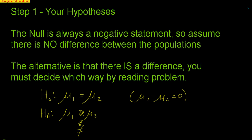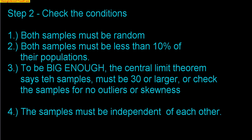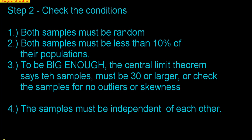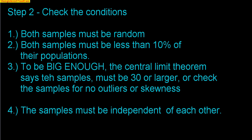Step two: check your conditions. These should sound familiar. Both samples must be random, both must be less than 10% of the population, and both samples must be 30 or larger — that's the central limit theorem telling us we can use the normal model. If either sample is under 30, you must check for outliers or skewness. And don't forget the fourth condition: when working with two samples, the two samples must be independent of each other.